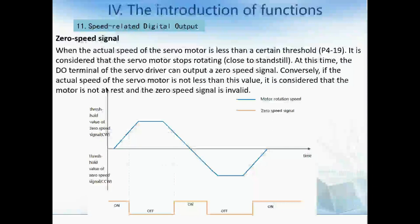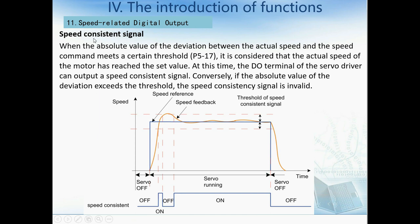The zero speed signal: when the actual speed of the servo motor is less than a certain threshold, the motor is considered stopped. At this time, the digital output terminal of the servo driver outputs a zero speed signal. Conversely, if the actual speed is not less than that threshold, the motor is considered not at rest and the zero speed signal is invalid. Regarding speed consistent signal: when the absolute value of the deviation between actual speed and speed command meets a certain threshold, the actual speed is considered to have reached the commanded value and a speed consistent signal is output. If the deviation exceeds the threshold, the speed consistency signal becomes invalid.